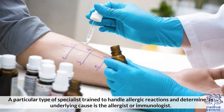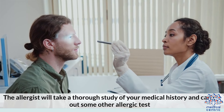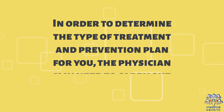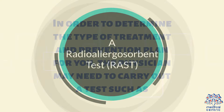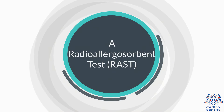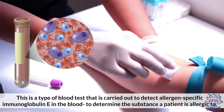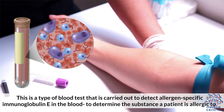Diagnosis: A particular type of specialist trained to handle allergic reactions and determine their underlying cause is an allergist or immunologist. The allergist will take a thorough study of your medical history and carry out some allergic tests. One test the physician may use is a radioallergosorbent test (RAST), a type of blood test carried out to detect allergen-specific immunoglobulin E in the blood to determine the substance a patient is allergic to.